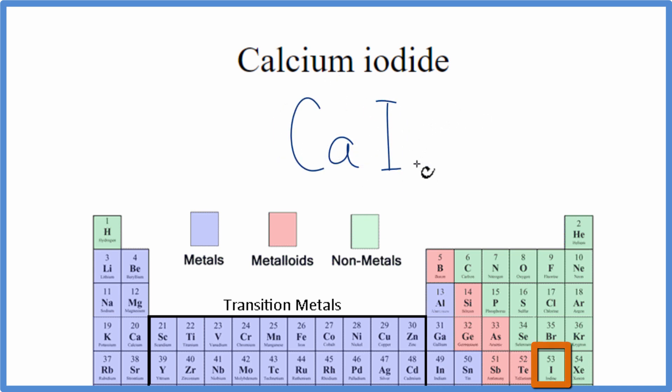When we have a metal and a nonmetal, we have an ionic compound. And with ionic compounds, we have to take into account the ionic charge.